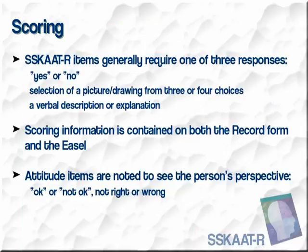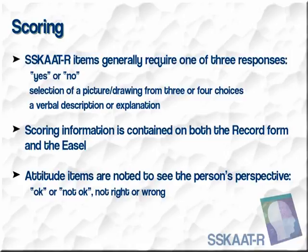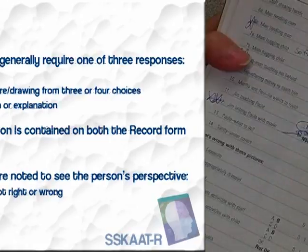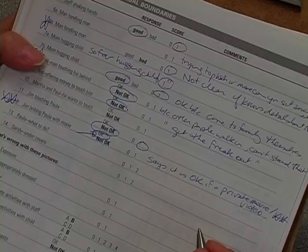In scoring the SCAT-R, we generally provide one of three responses: a yes-no, a selection of a picture drawing from one of three or four choices, or the request to give a verbal description or explanation. The scoring information is contained on both the record form and on the easel. Attitude items are noted to see if the person's perspectives are okay or not okay — they are not evaluated as right or wrong.